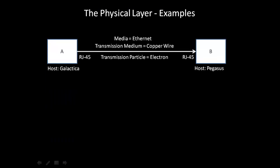Let's take a look at some specific examples of the physical layer. The first example is Ethernet. The transmission medium is copper wire and the transmitting particle is the electron. In this example, host A, named Galactica, sends a stream of electrons that modulate to host B, named Pegasus. These are connected via RJ45 connectors and copper wire.